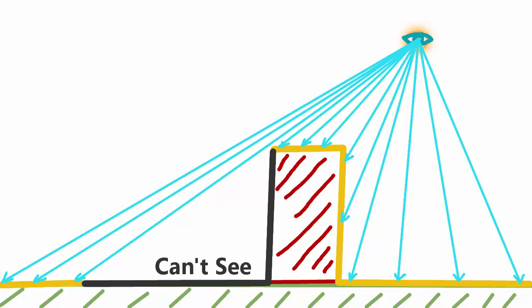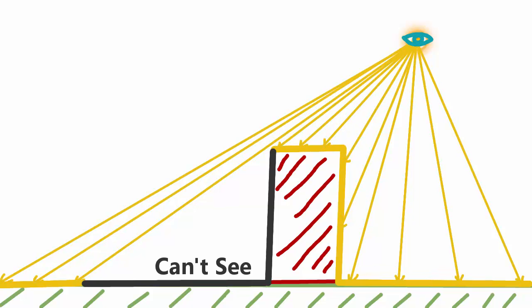Any areas that you can't see would be in shadow, because if you can't see them then the light can't reach them. To implement shadow mapping we're going to be using this concept of what the light can see and what it can't see to determine what should be in the light and what should be in shadow.